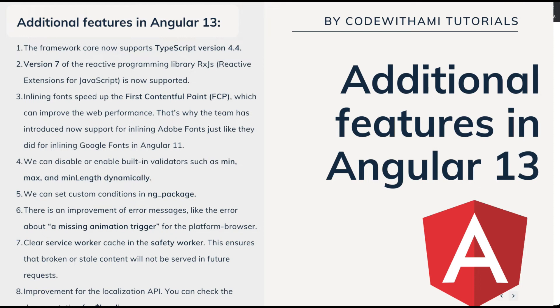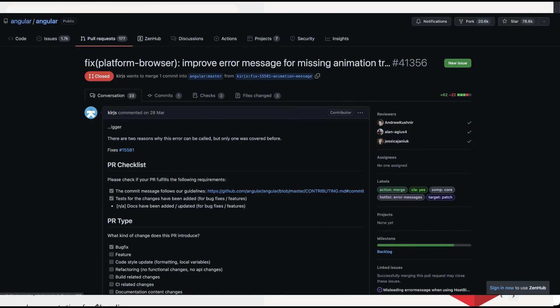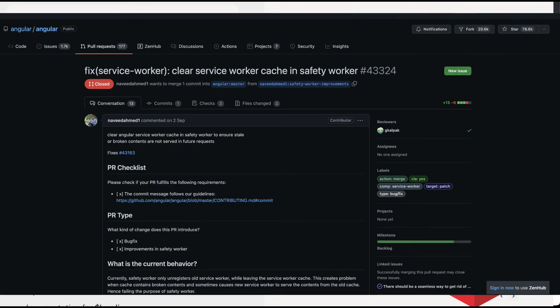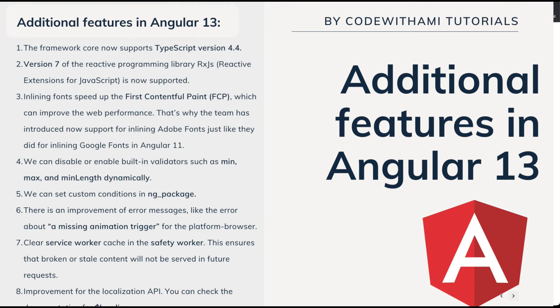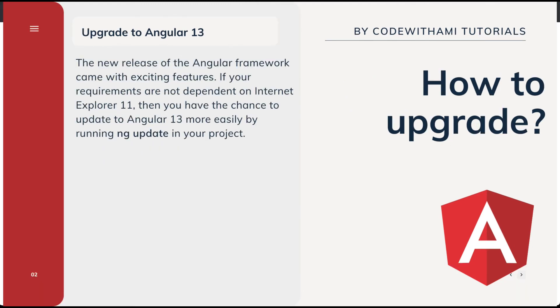We can now dynamically disable or enable built-in validators such as min, max, and minLength. You can set custom conditions in ng-packages. There are also improvements to error messages — such as clearer errors about missing animation triggers for the platform-browser package — and a fix to clear the service worker cache so broken content will not be served in future requests. The localization API has also been improved.